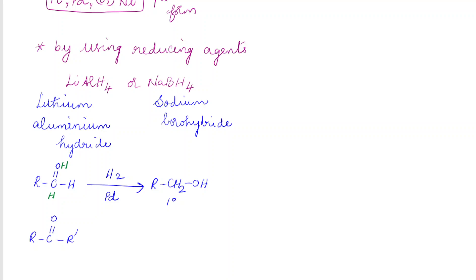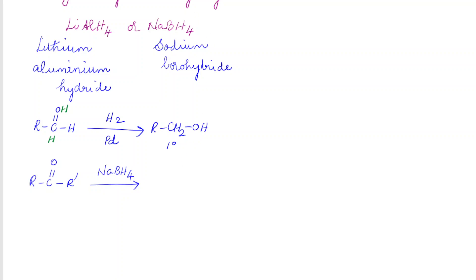For a ketone, in place of hydrogen on the carbonyl carbon we have an alkyl group. When a ketone is reduced using sodium borohydride, two hydrogen atoms are added — one to the carbon and one to the oxygen — thereby giving R-CH(OH)-R'. This is a secondary alcohol. This completes the reduction of aldehydes and ketones.